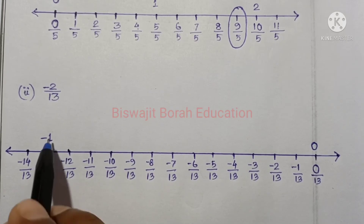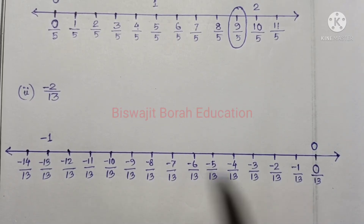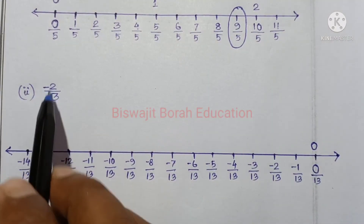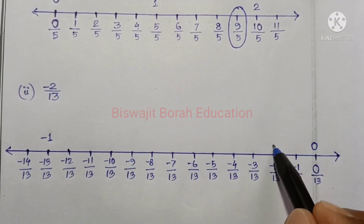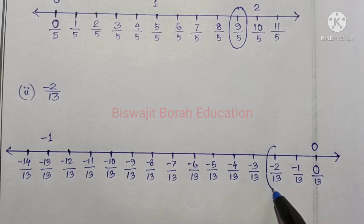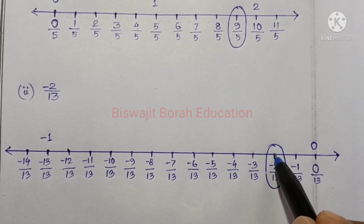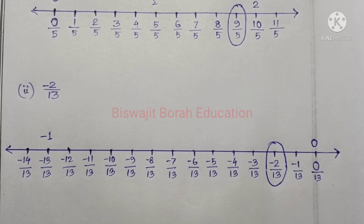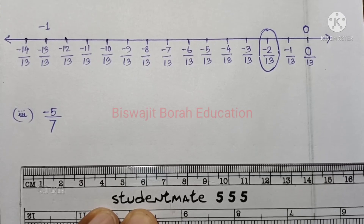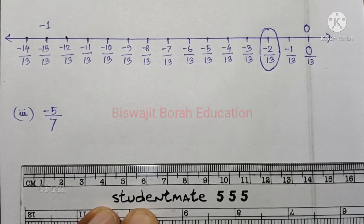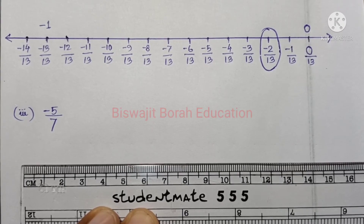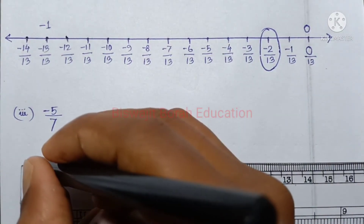So 0. So remember: minus 2 by 13. If minus 2 by 13 comes, then the mark will be this. Mark it and understand. So do this carefully. Now I will explain clearly — three numbers: minus 527. If you remember 11 cm...